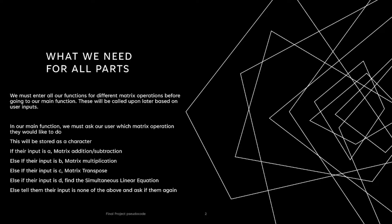Then, in our main function, we will ask the user to input which matrix operation they would like to do. This will be stored as a character which will be used to determine the type of function that will be done.